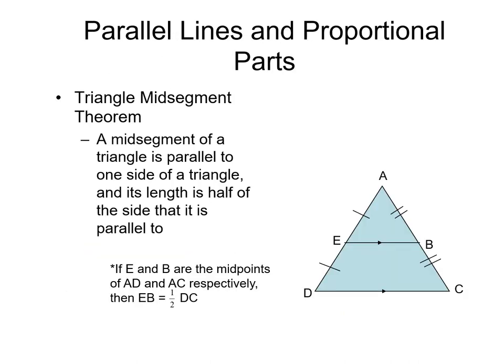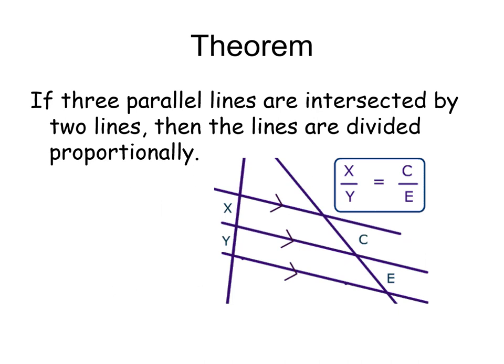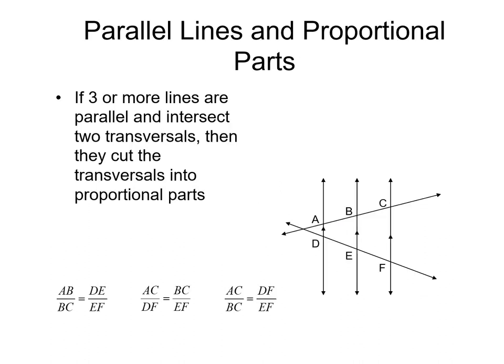And we have the converse of it. Parallel lines and proportional parts. Triangle mid-segment theorem. We will discuss that in detail. Also, if three parallel lines are intersected by two lines, then the lines are divided proportionally. So there is a proportion.